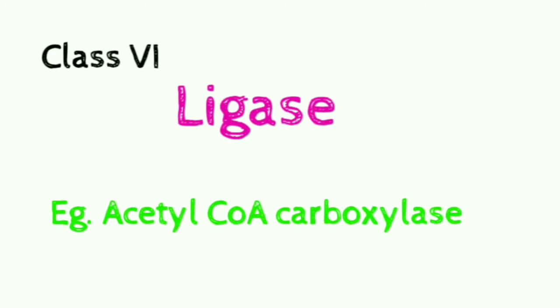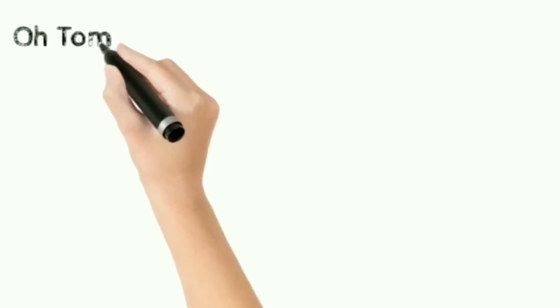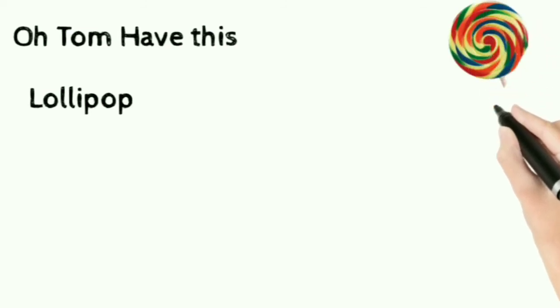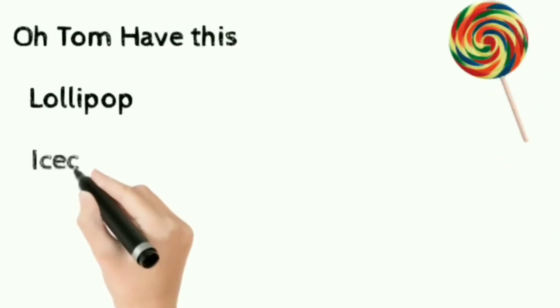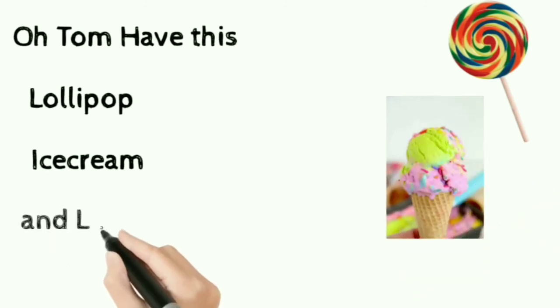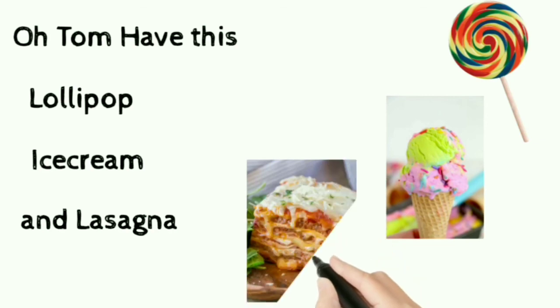Now how to remember all these classes of enzymes in a sequence? Let's see the mnemonic for today: Oh Tom, have this lollipop. I guess everyone likes lollipop and ice cream. And lasagna, which is one of my favorites. Now let's see what all these words individually mean.